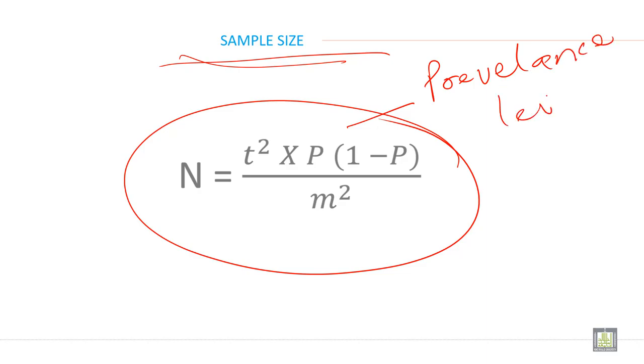Then you can use this formula where T square or Z square, it depends. Z is equal to 95% confidence level, it is 1.96. And P is prevalence level and whatever is the P.